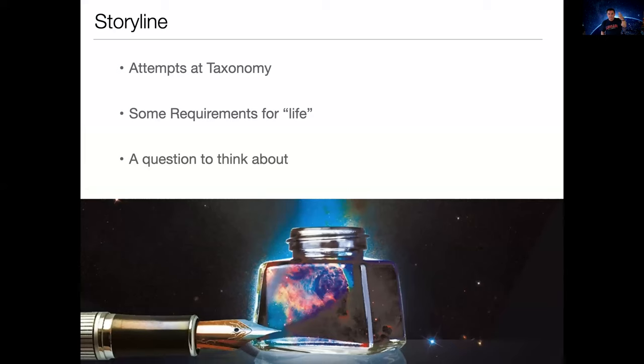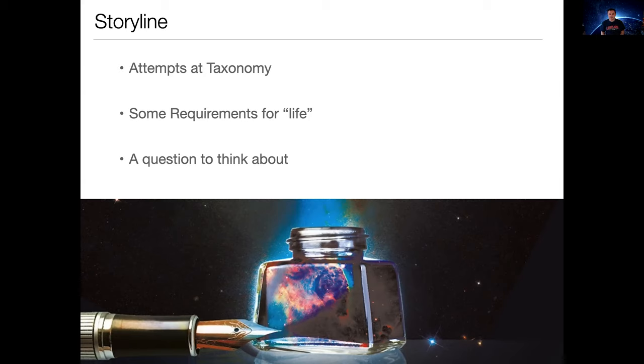We'll start with some of these attempts at taxonomy, we'll talk about ways we could approach looking at life and sorting it into behaviors and categories and properties, and then we're going to define kind of six basic categories of things that we think you have to have in order to be identified as life. Then I'll leave you at the end with a question to bend your brain about it.